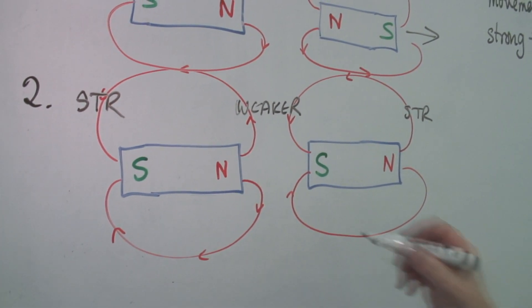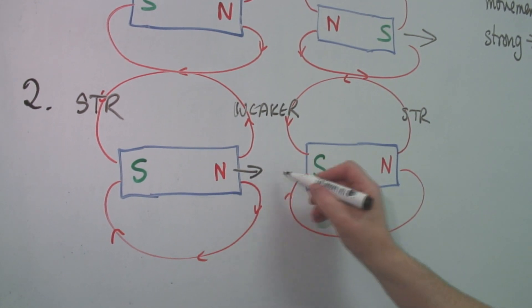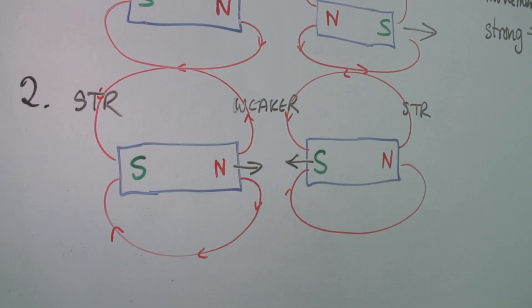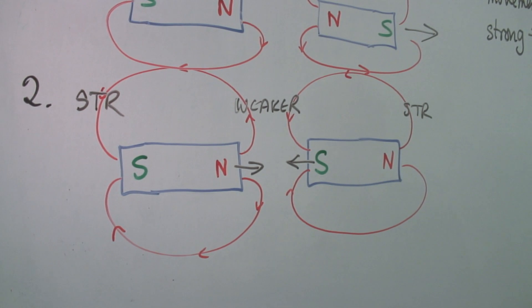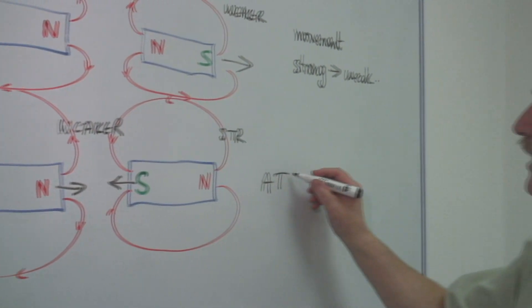And of course, by the same rule, we're going to find that the two magnets actually come towards each other. They attract. So here we've got attraction.